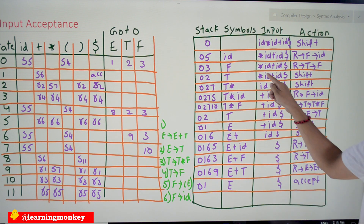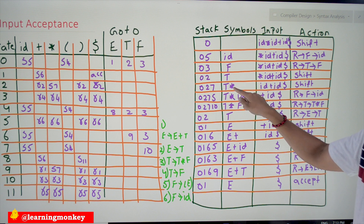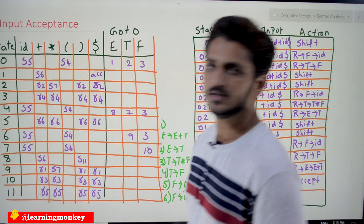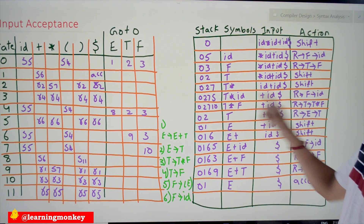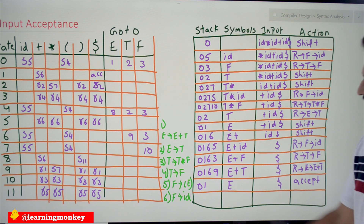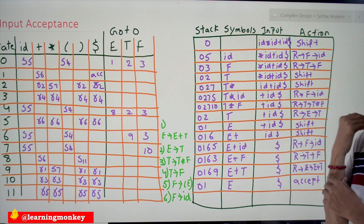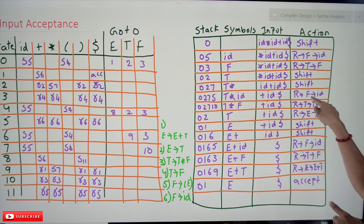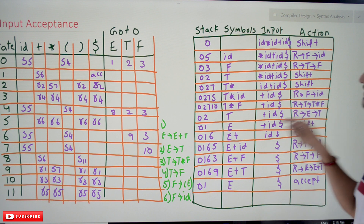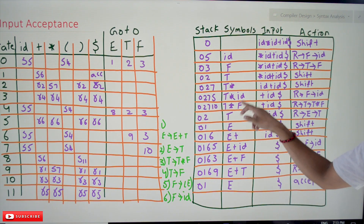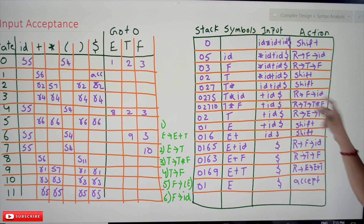State 7 on id says shift 5, so id is consumed and 5 is pushed. Stack: [0, 2, 7, 5]. Next, state 5 on + says reduce by production 6: F → id. Right-hand side has one symbol, so pop one — 5 is popped. State 7 on F says push 10. Stack becomes [0, 2, 7, 10]; id is converted to F. Remaining input: + id $. The string so far is T ★ F + id $.